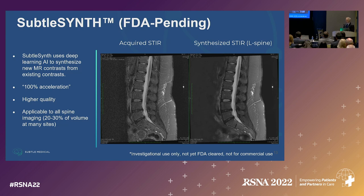The most immediate is SubtleSynth, which is FDA-pending at this time. This is the beginning of a long line of synthetic products for us. This product uses deep learning to synthesize new MR contrasts from existing contrasts — I like to call this 100% acceleration. In many cases, you actually end up with higher quality.